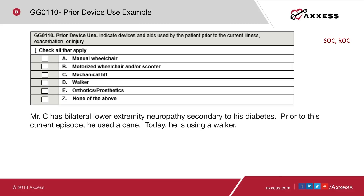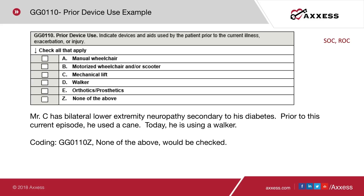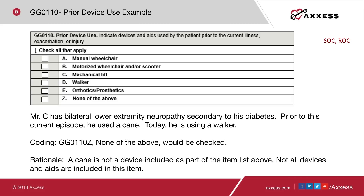Let's look at an example. Mr. C has bilateral lower extremity neuropathy secondary to diabetes. Prior to the current episode, he used a cane. Today he is using a walker. How would you code GG0110 prior device use? If you said Z, none of the above, you would be correct. A cane is not a device included in the item list. Not all devices and aids are included in this item.